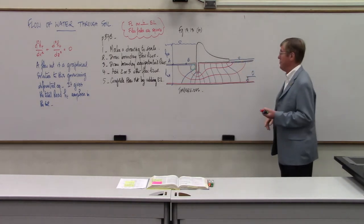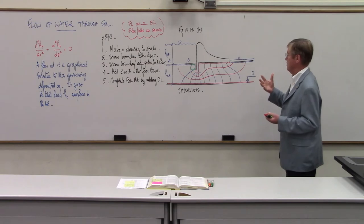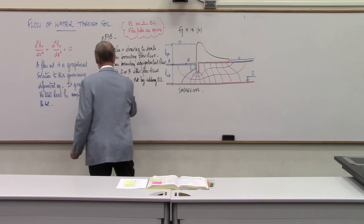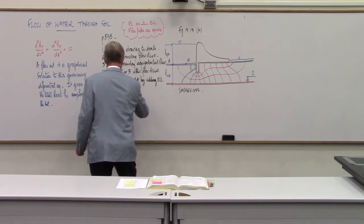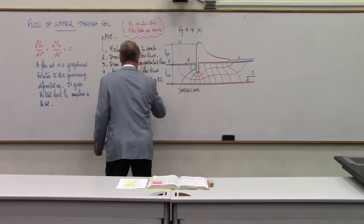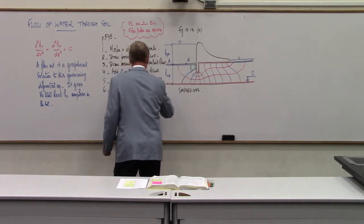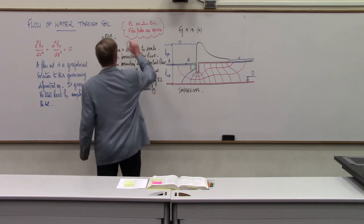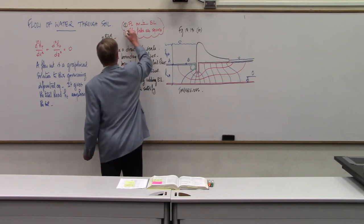This initial attempt is not a perfect flow net. After drawing it, you must adjust the flow net to satisfy rules one and two — perpendicularity and square flow fields. For example, if you cannot inscribe a circle in a flow field, push the blue equipotential line or raise the red flow line until the cell becomes more square.